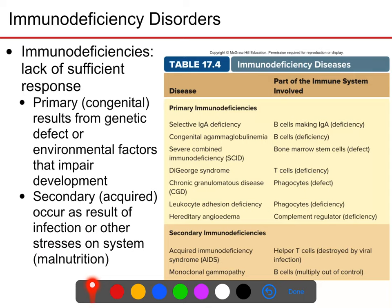Some examples of primary immunodeficiency would be selective IgA deficiency, where your B cells don't have the ability to make IgA — the component of the constant region of the antibody that allows IgA production is mutated. DiGeorge syndrome is a deficiency in T cells. Hereditary angioedema is a mutation in the regulation of the complement system.